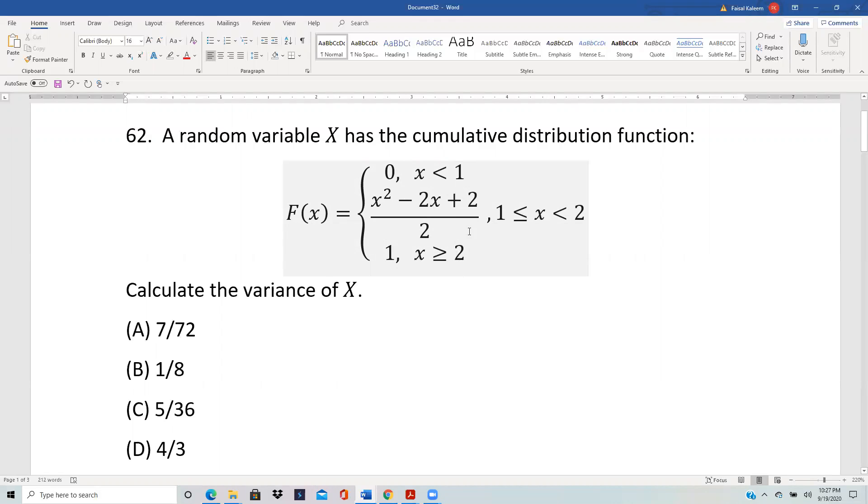So there's nothing funny happening as you go from the second to the third part, but there is something happening as you go from the first to the second part. What's happening is that the probability was zero as long as you were less than 1 and suddenly took a jump at 1, and it jumped to one half.